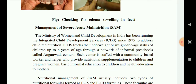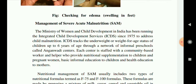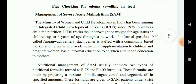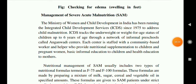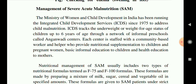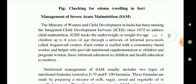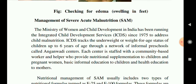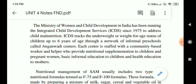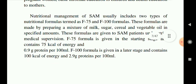The Ministry of Women and Child Development in India has been running the Integrated Child Development Services (ICDS) since 1975 to address child malnutrition. ICDS tracks under-nutrition through a network of preschools called Anganwadi centers, each staffed with a community-based worker who provides nutritional supplementation to children and pregnant women, basic education, and health education to mothers. Children come to these centers where they receive midday meals, improving their nutrition.